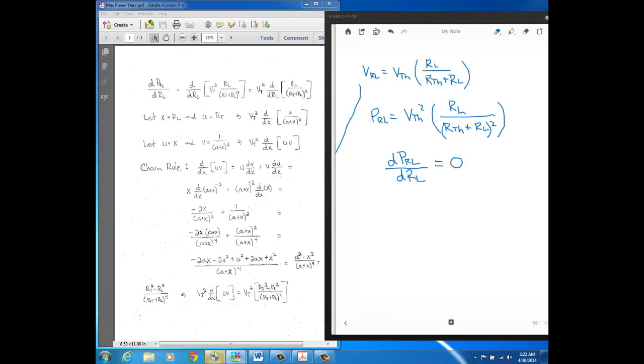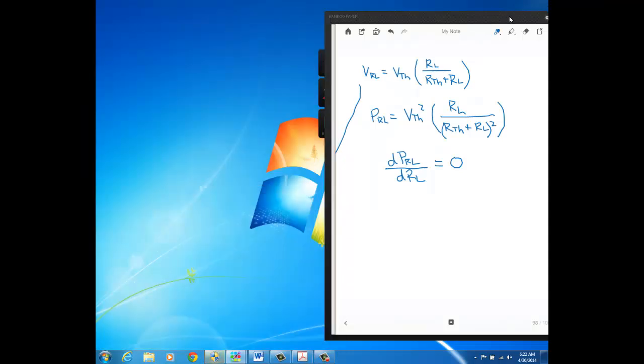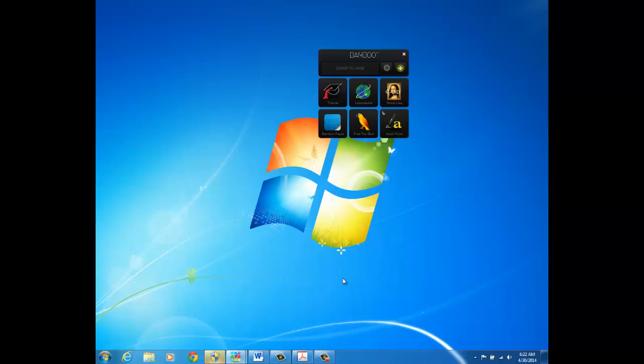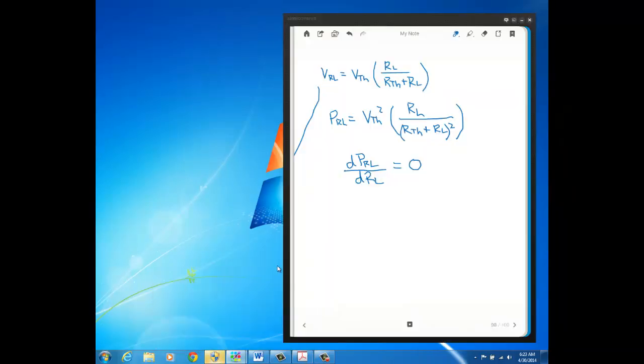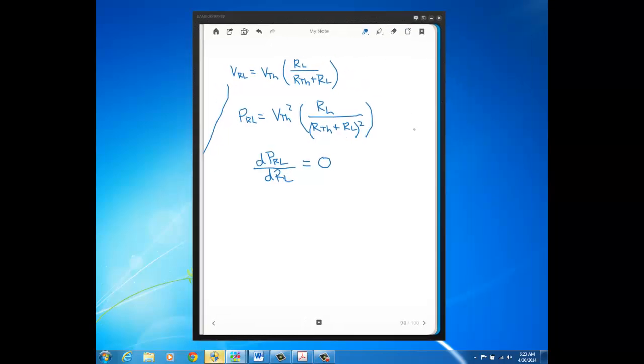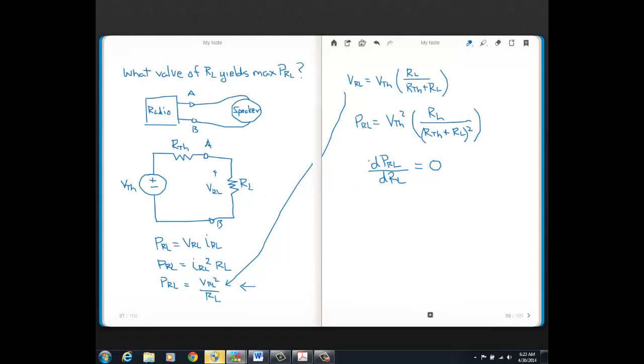Well, if you look here at the numerator, since it's R Thevenin squared minus RL squared, if RL equals R Thevenin, that will make the numerator zero and that makes the whole expression zero. So you see that's our answer to the question. The answer to our question, what value of RL yields the maximum PRL is just that the load resistance equals the Thevenin resistance.